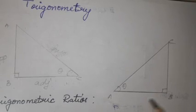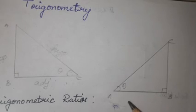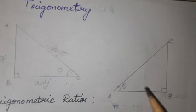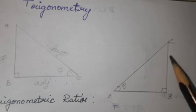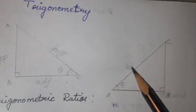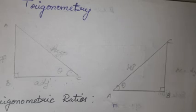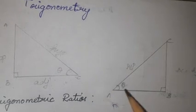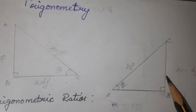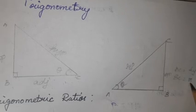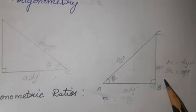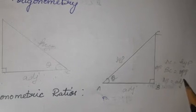Now I am going to tell this triangle's opposite side, adjacent side, and hypotenuse side — the same concept. First, find the hypotenuse: it is the right-angled opposite side, the longest side. That is AC — so AC equals hypotenuse (HYP). Next, the opposite side: angle A is formed here, so the side opposite to it is BC. So BC equals opposite (OPP). Adjacent side is AB, so AB equals adjacent (ADJ).